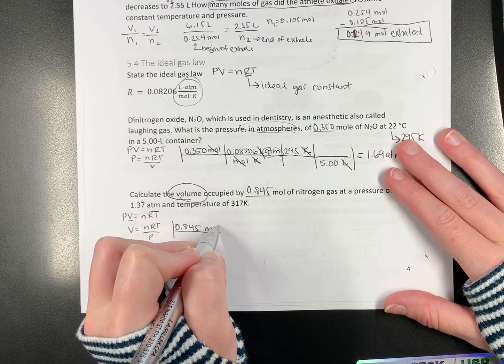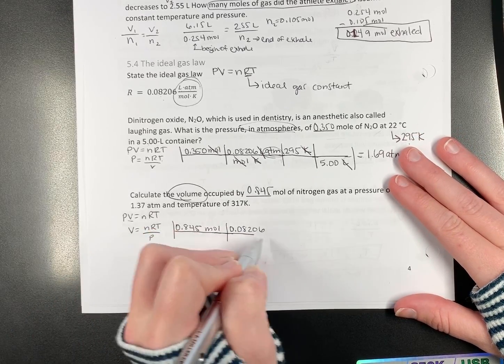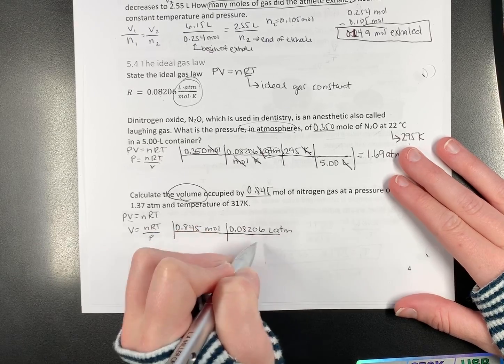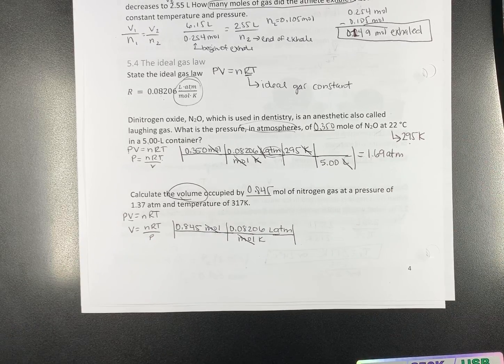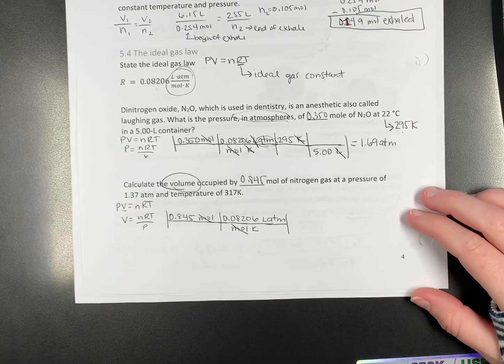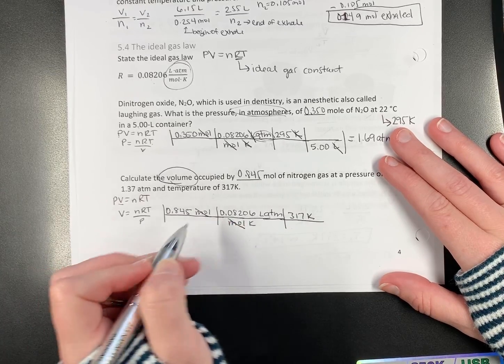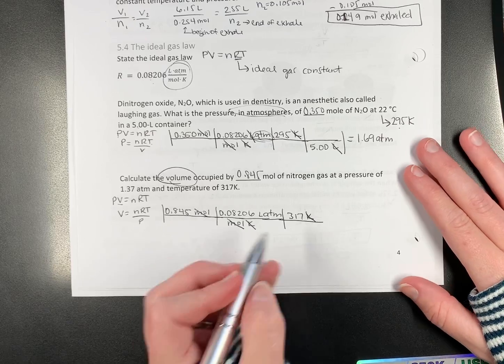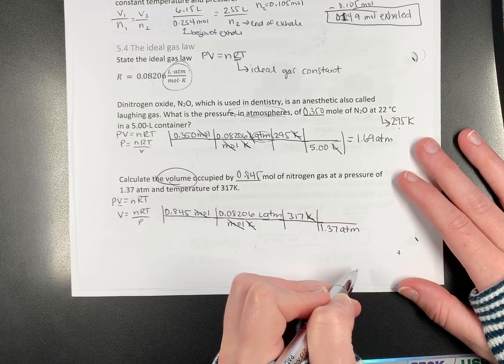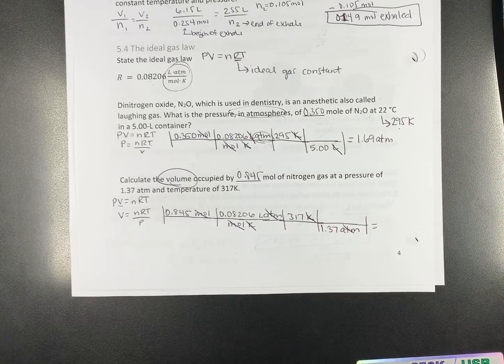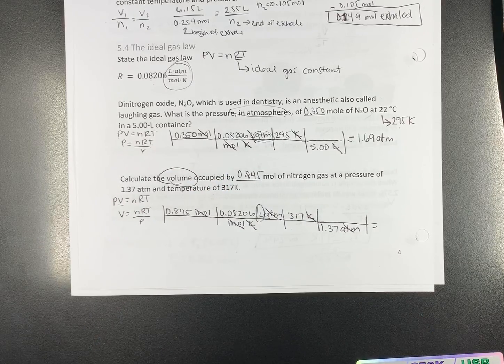0.845 moles. R, 0.08206 liter atmospheres, mole kelvin goes in the bottom. Be careful how you write that. T comes next. It goes on the top. 317 kelvin. Pressure goes on the bottom. 1.37 atmospheres. Cancel out your units. You want volume. You should only have a unit of volume. There's liters. You're good to calculate.